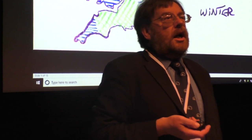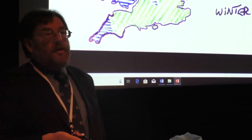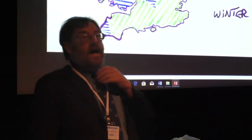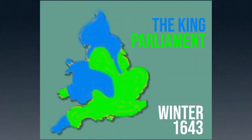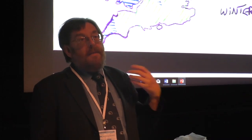That map is certainly not a map of popular allegiance — what the people wanted. You cannot say that in the green areas the ordinary people were fervently parliamentarian. There were plenty of royalists marooned in parliamentarian territory, and pro-parliamentarians marooned in royalist areas. That is a map of military control by the end of winter 1642–3. It isn't a map of popular allegiance — anything but.